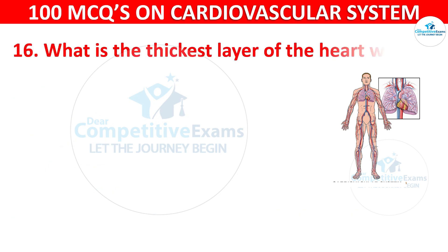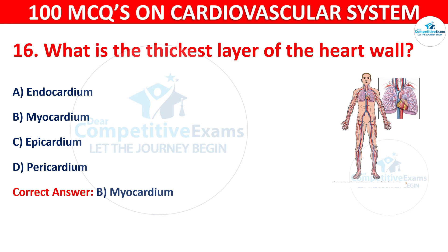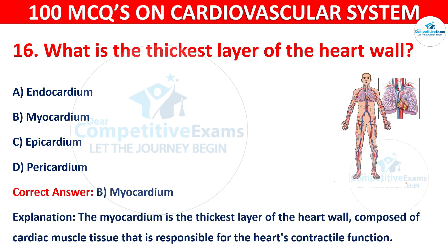Q16. What is the thickest layer of the heart wall? Options are: endocardium, myocardium, epicardium, or pericardium. The correct answer is B — myocardium. The myocardium is the thickest layer of the heart wall, composed of cardiac muscle tissue that is responsible for the contractile function of the heart.